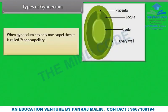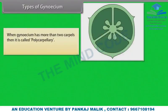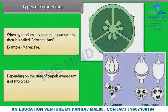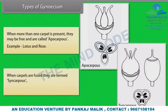When gynosium has only one carpel, it is called monocarpellary, example Leguminosae. When gynosium has two carpels, it is called bicarpellary, example Solanaceae and Cruciferi. When gynosium has more than two carpels, it is called polycarpellary, example Malvaceae. Depending on the state of carpels, gynosium is of two types: Apocarpous — when more than one carpel is present and they are free, example Lotus and Rose; Syncarpous — when carpels are fused, example Mustard and Tomato.